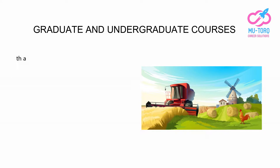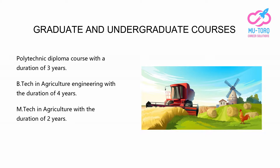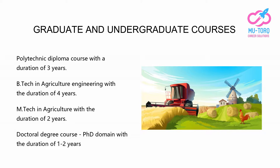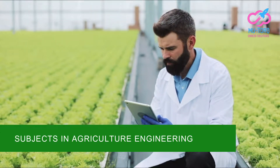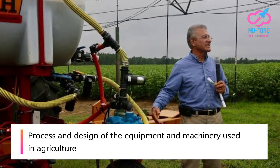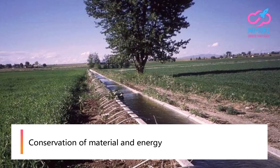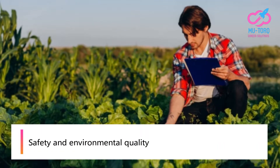The following is a list of graduate and undergraduate courses: Polytechnic diploma course with a duration of three years; B.Tech in Agricultural Engineering with a duration of four years; M.Tech in Agriculture with a duration of two years; and doctoral degree or PhD with a duration of one to two years. Subjects in agricultural engineering include process and design of equipment and machinery used in agriculture, energy, water and soil quality, conservation of material and energy, safety, and environmental quality.